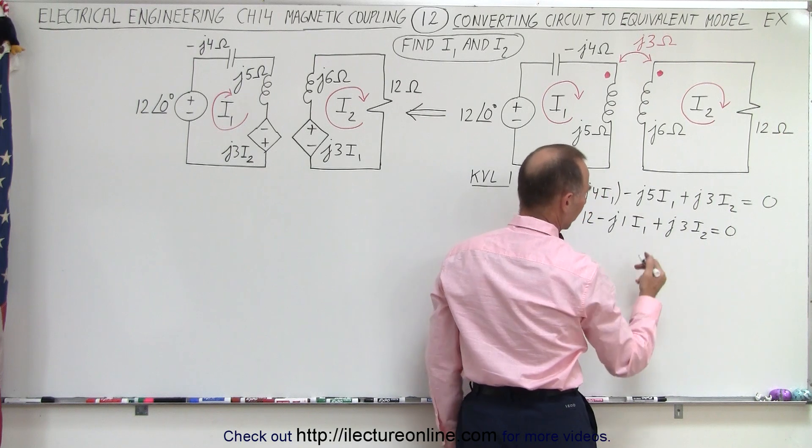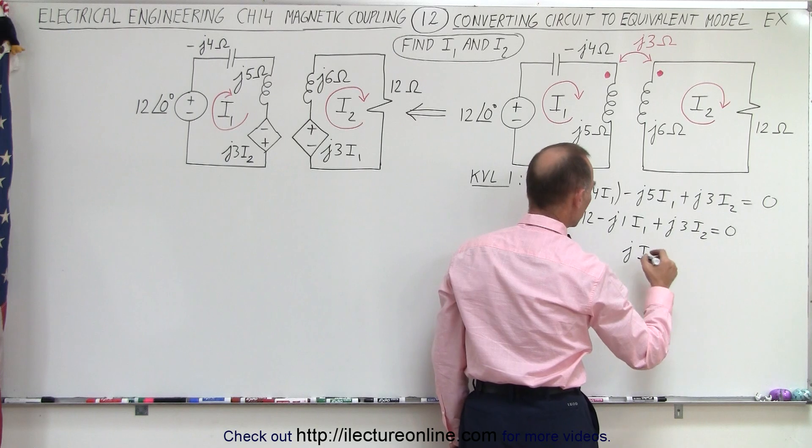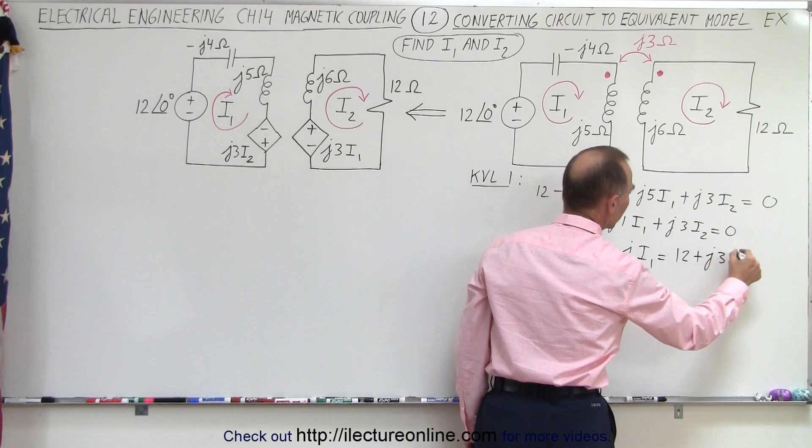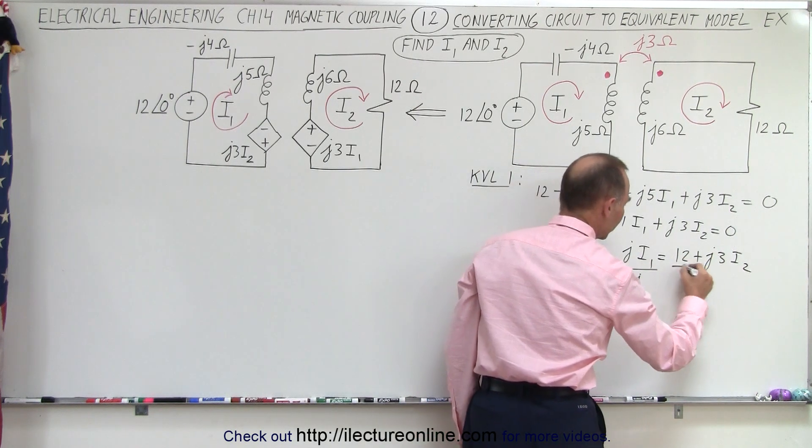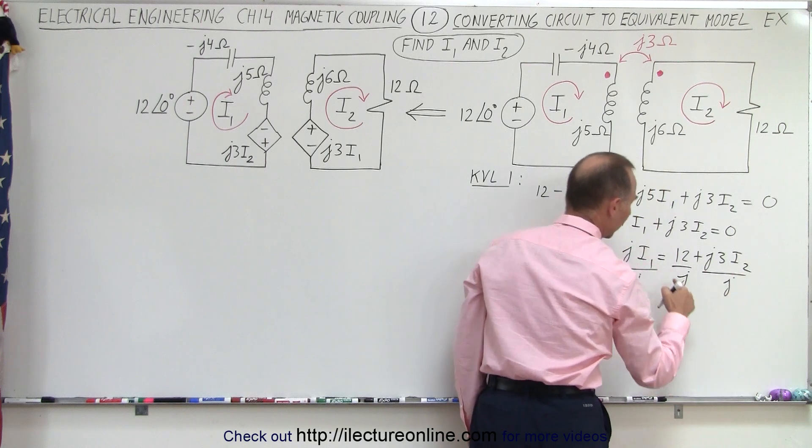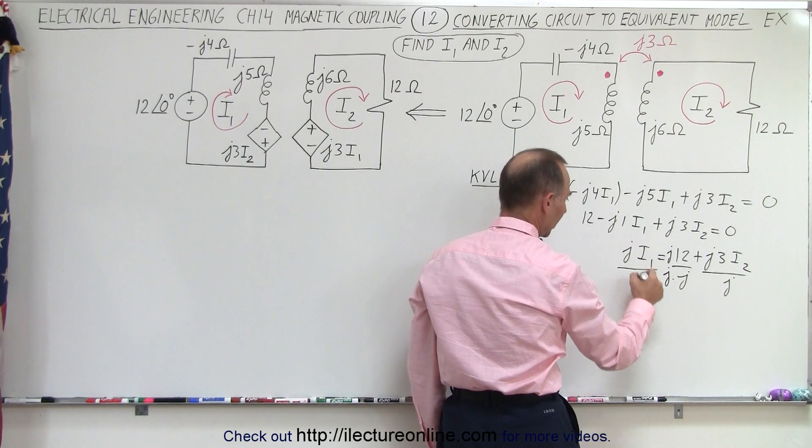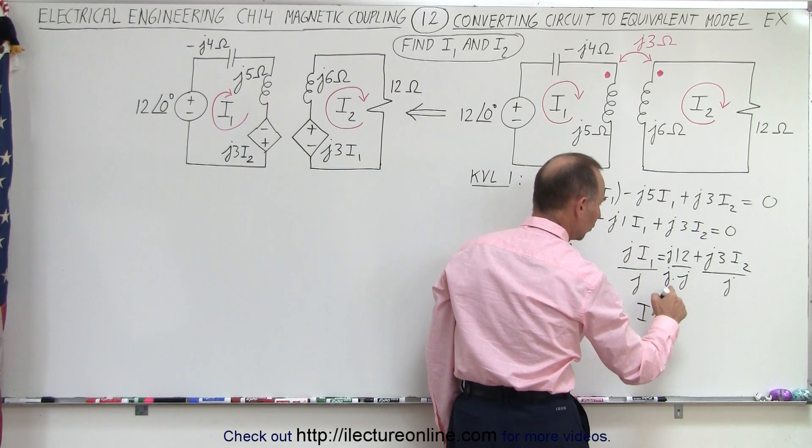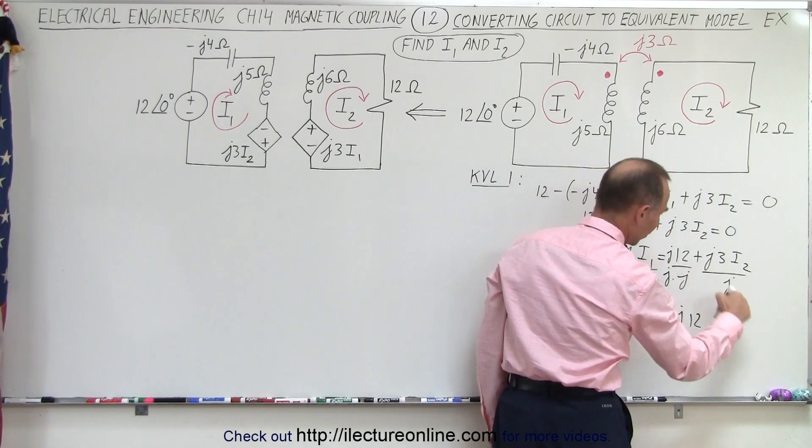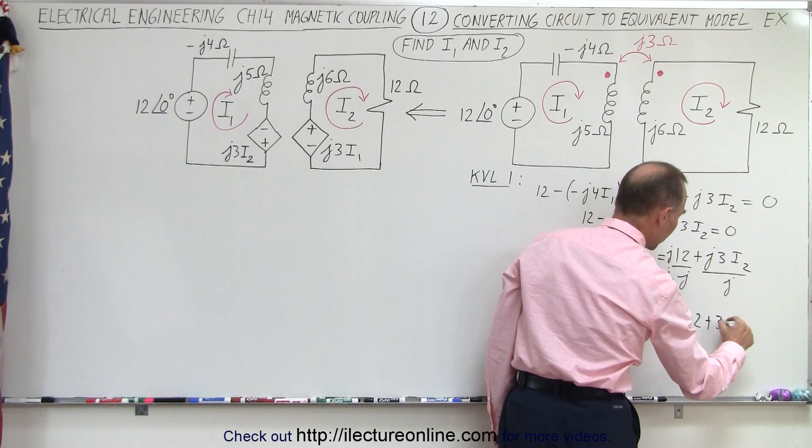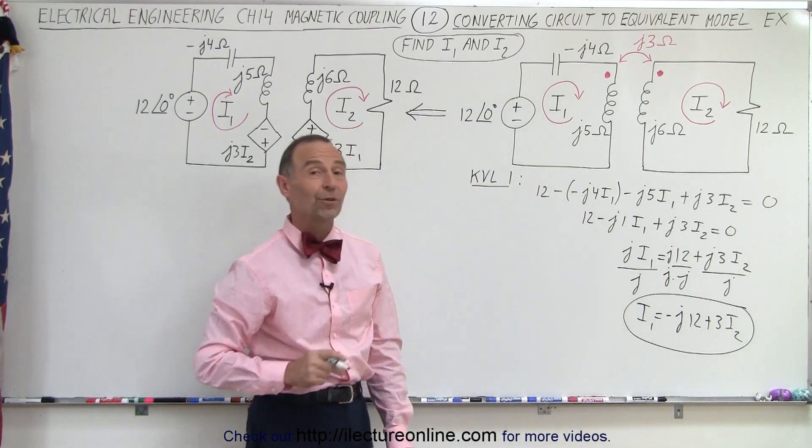And then solve for I1. Let's move this to the other side and turn the equation around. So we end up with J1 is equal to 12 plus J3I2. And then we divide both sides of the equation by J. So divide this by J, divide that by J, divide this by J. And here we're going to multiply both the top and the bottom by J. So here we get J cancels J. We get I1 is equal to negative J12 and over here the J's cancel out. We have plus 3I2, which gives us our first equation where we have I1 in terms of I2.